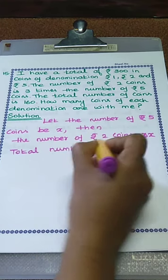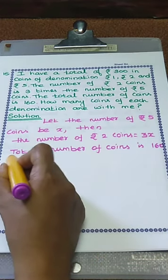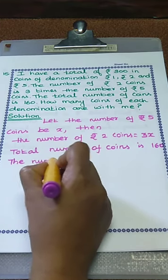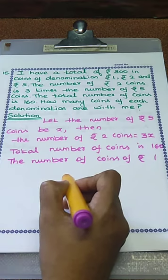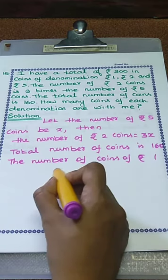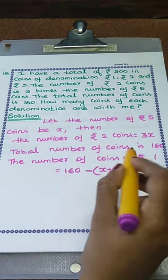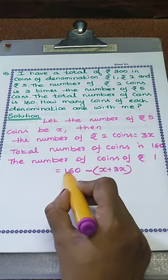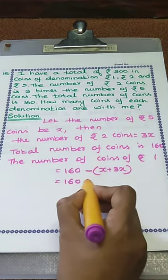The total number of coins is 160. We also need to find the number of Rs. 1 coins. Since clues are given only for Rs. 5 and Rs. 2 coins, we take Rs. 1 coin count as 160 minus (x plus 3x), which equals 160 minus 4x.